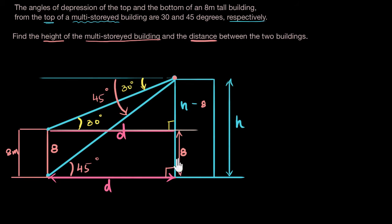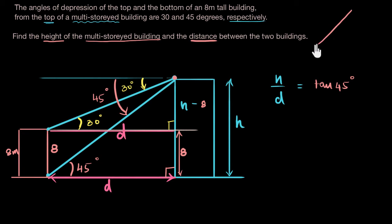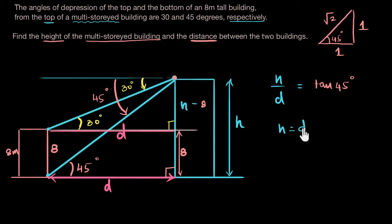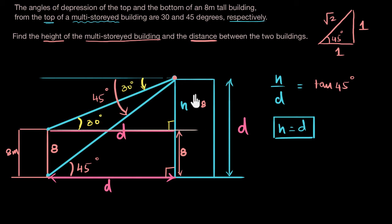Let's do the 45 degree one first — this is h, this is d. So h/d = tan 45, opposite by adjacent. And tan 45 = 1. I always just draw it quickly: if this is one, this will be one because it's an isosceles triangle, and the hypotenuse is root two by Pythagoras. So here I need tan, which is 1. That gives me h equals d — super convenient, makes the question much simpler.